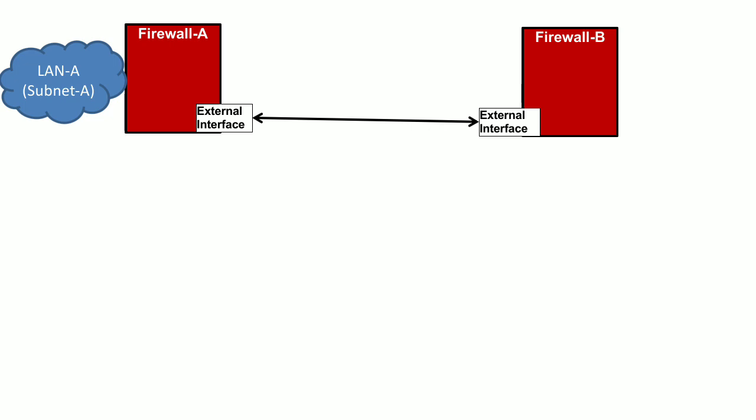This is Local Area Network A behind Firewall A, and Local Area Network B behind Firewall B. We want these two networks to communicate with each other. We will route traffic from LAN A towards the external interface of Firewall A, then the internet service provider routes it towards the external interface of Firewall B, and upon reaching Firewall B, the traffic is routed towards LAN B. However, there is an issue with this arrangement.